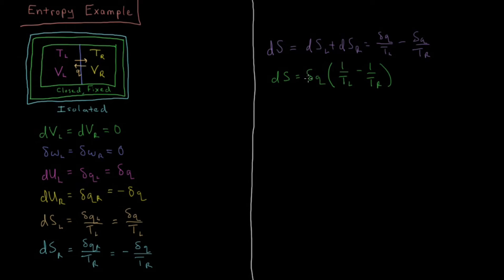From the second law of thermodynamics, the entropy change for any process in an isolated system must be greater than or equal to zero. It equals zero for a reversible process and is greater than zero for a spontaneous or irreversible process. So let's see what happens for different values of TL and TR.